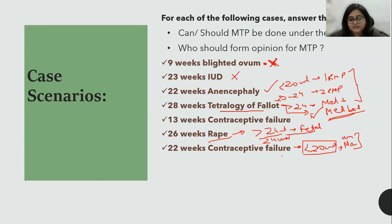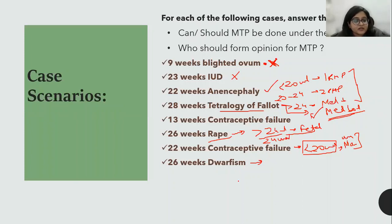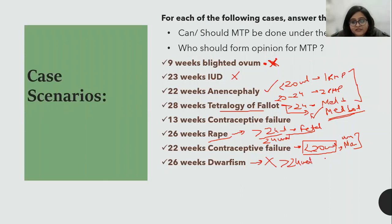Next: 26 weeks — the mother has dwarfism, which comes under significant disability. Can she be allowed to have an MTP? No. After 24 weeks, only fetal anomaly is permitted. The mother's disability is not an indication beyond 24 weeks.